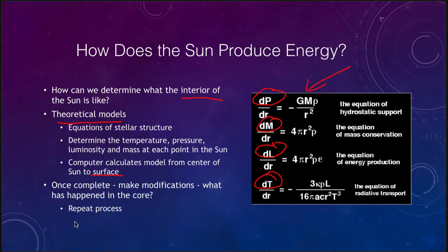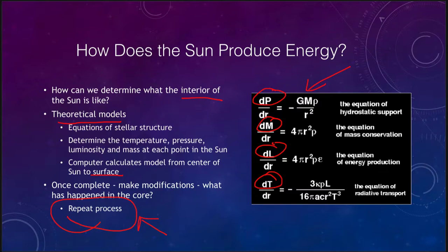You can modify your parameters — perhaps adjusting the temperature or the pressure — to fix what you see on the surface of the Sun, and then repeat the process. It is a continual process to explain what is going on. This is far more than we go into in this class, but it is important to see that there are ways to calculate these parameters at every position within the star.